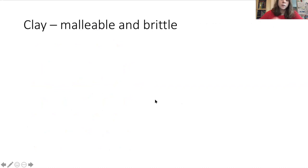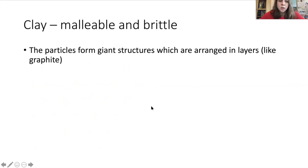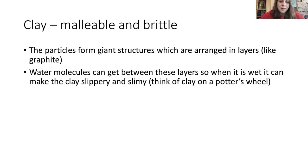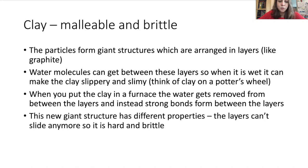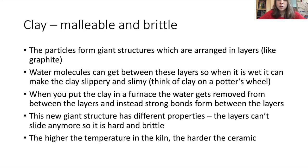Thinking about clay in terms of properties, it's a funny one because it's malleable when you start with it but then it becomes brittle. The particles form giant structures which are arranged in layers - remember graphite, it's a bit like that. Water molecules can get in between those layers, so when it is wet it can make the clay slippery and slimy. When you put the clay in the furnace though, the water that's in between those layers gets removed and then you end up with bonds forming between the layers. Those bonds are strong and give it totally different properties - it then becomes a really rigid, brittle structure. You can produce lots of ceramics by controlling the temperature of your kiln, and the higher the temperature of the kiln, the harder the ceramic is going to be.